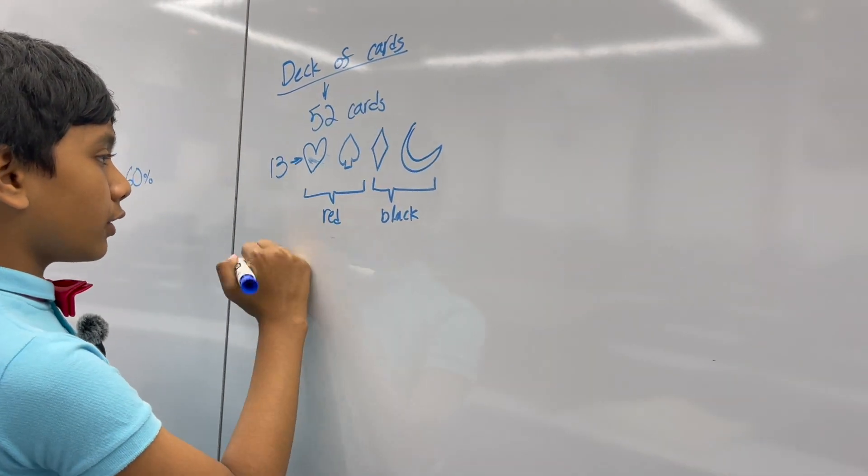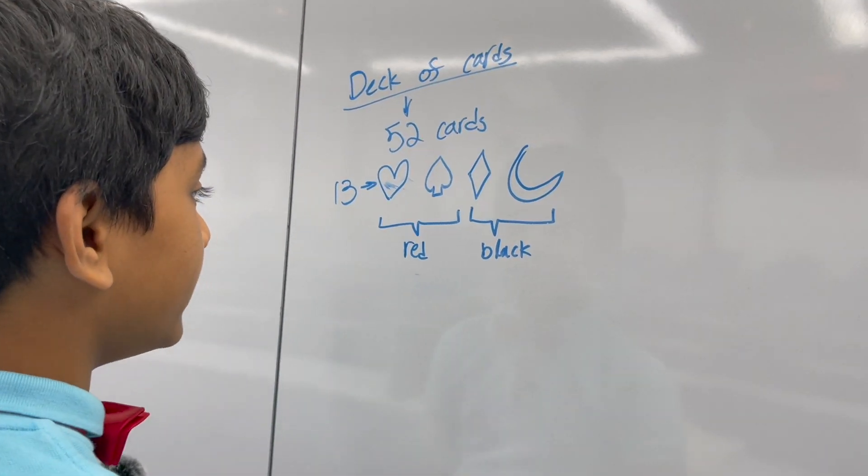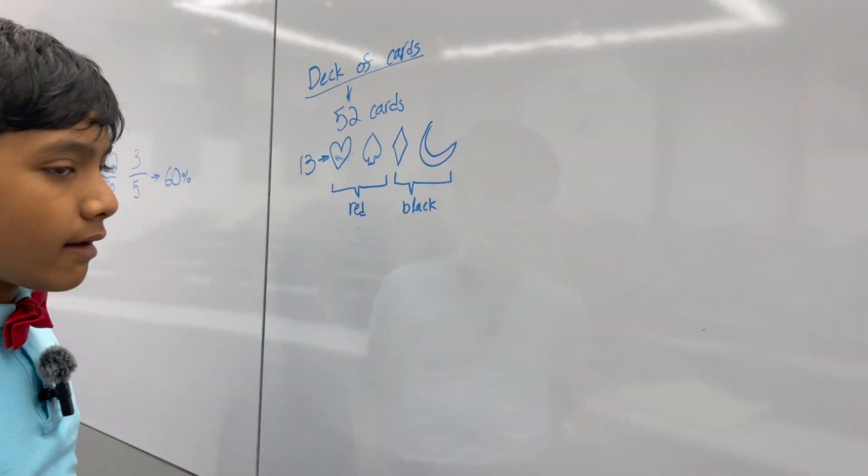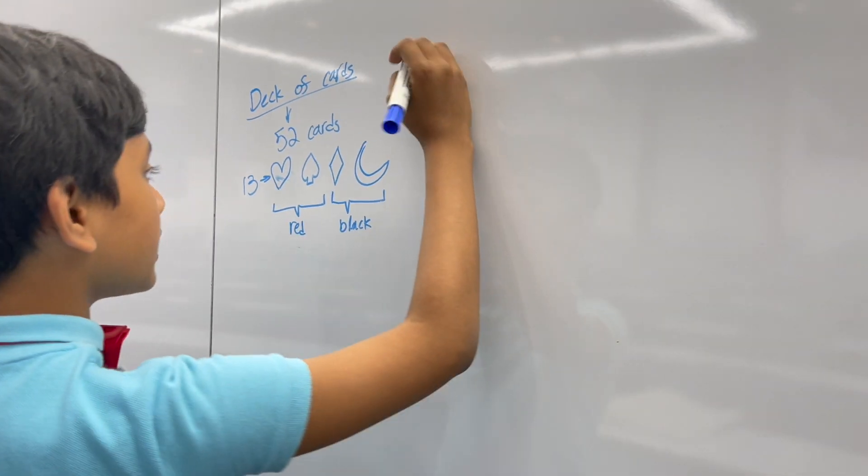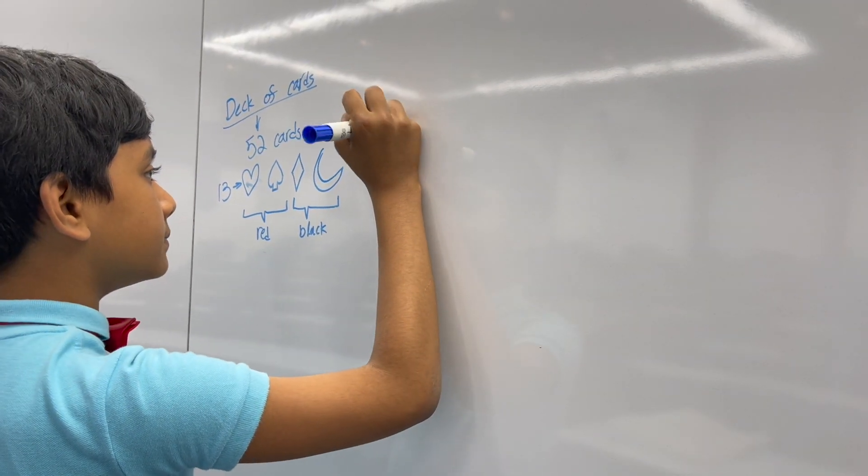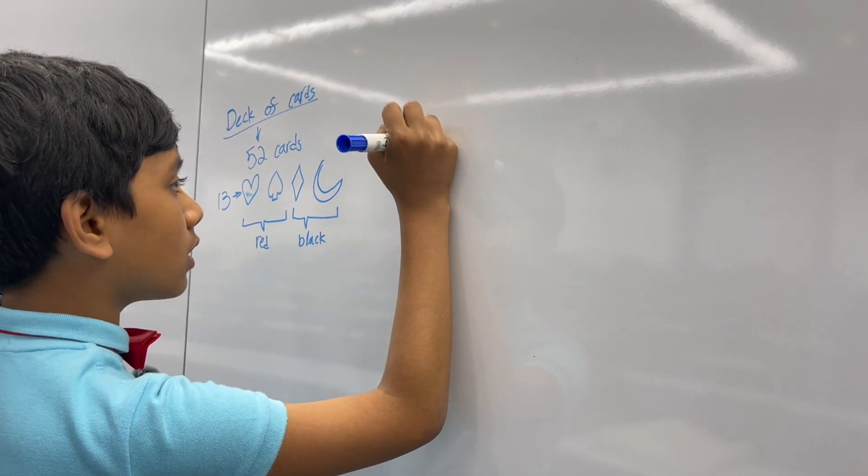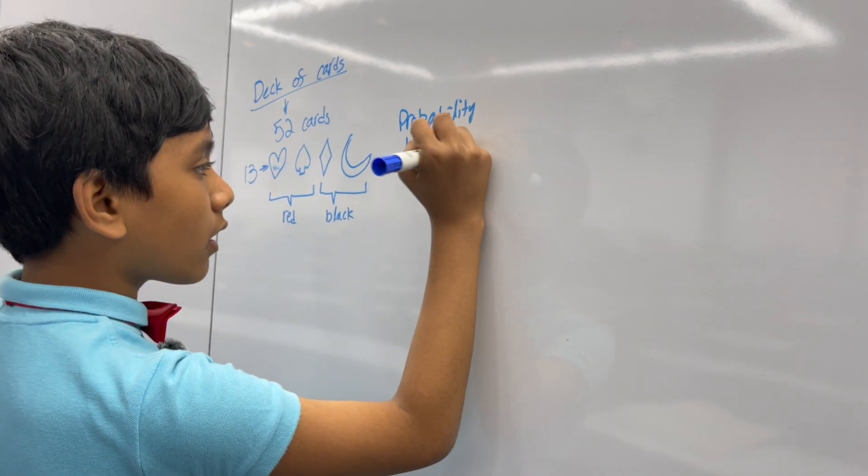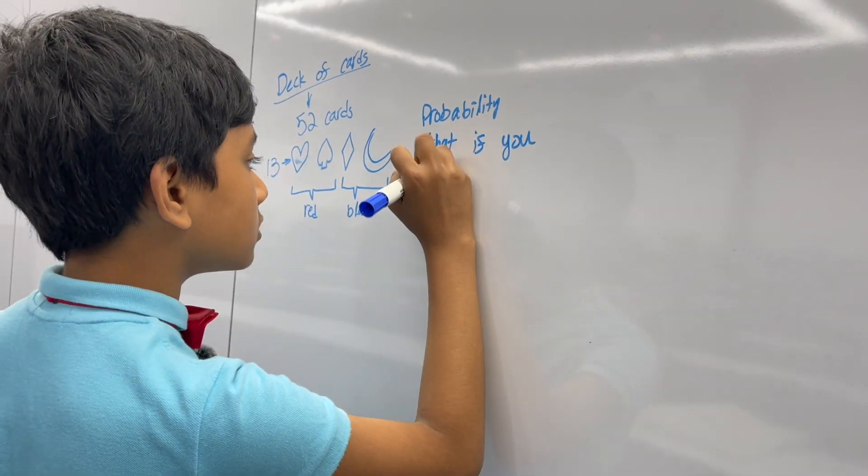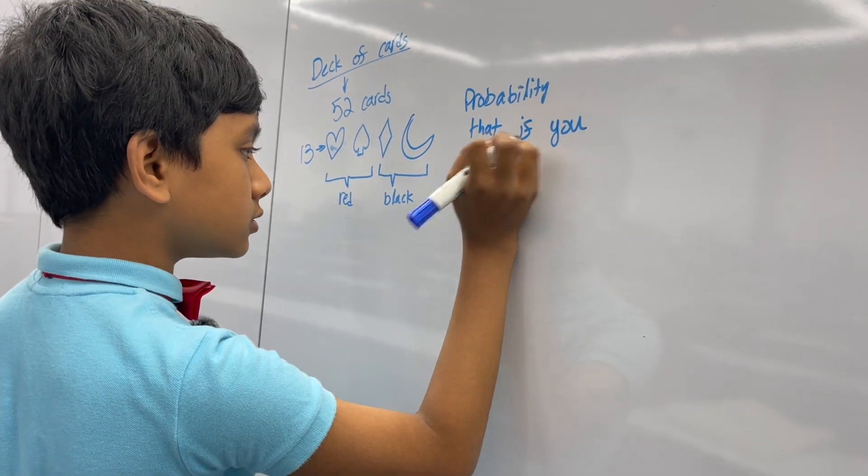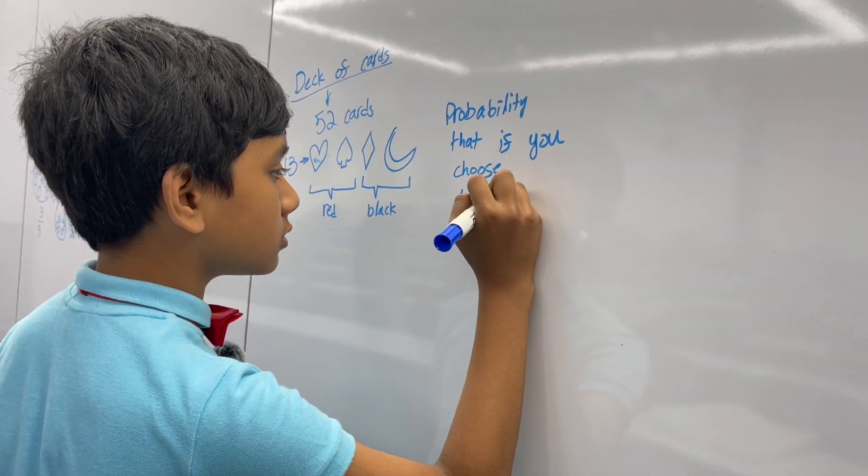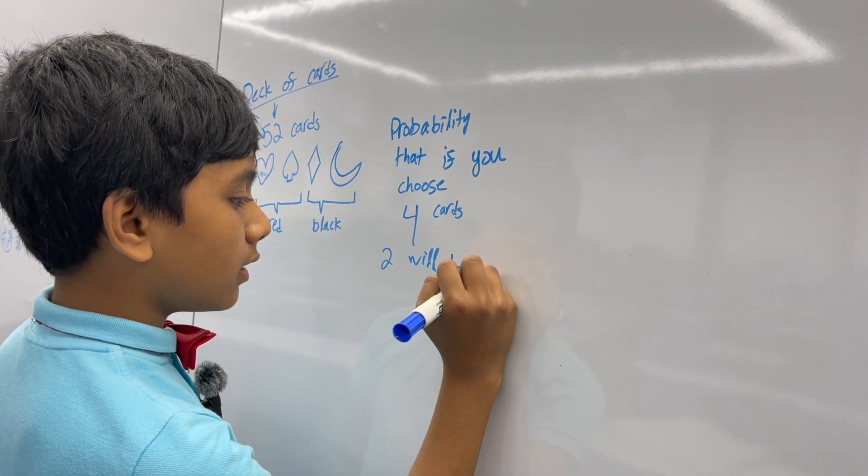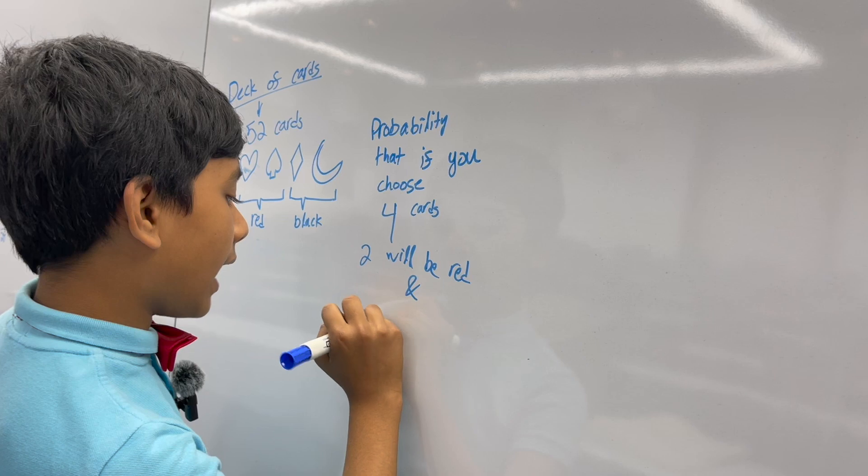So, there are thirteen cards of each suit, so then, my question to you is, my first question to you is, what is the probability that if you choose four colors, or four cards, that two will be red, and two will be black?